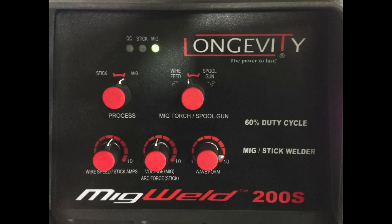So here are the settings on the machine. You can see the process knob is selected to MIG, the MIG torch spool gun knob is selected to wire feed, the wire feed speed is set at about number six, the voltage or MIG setting is about midway and the waveform is about number eight.